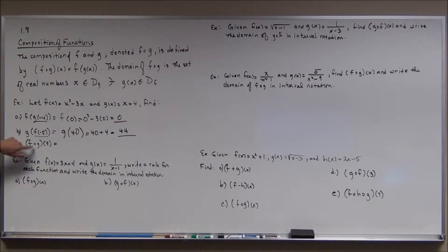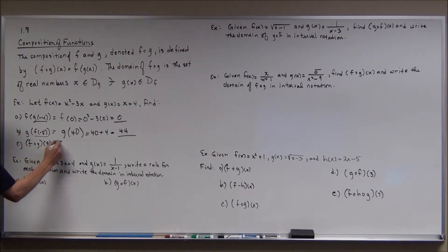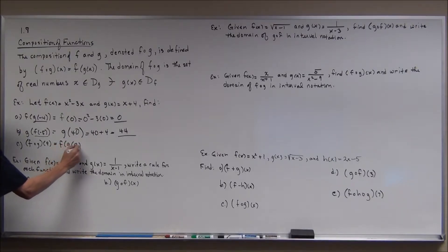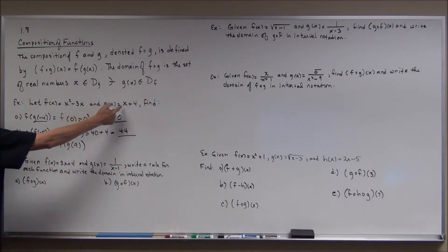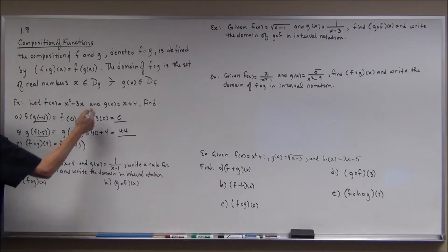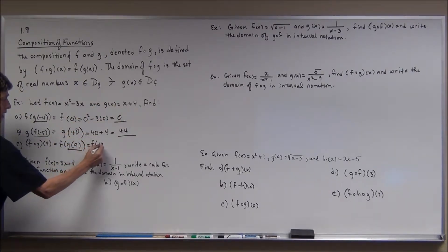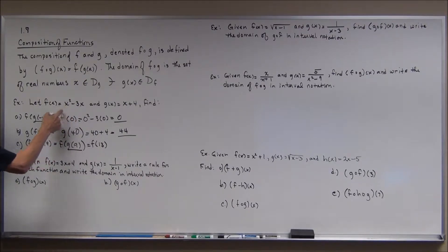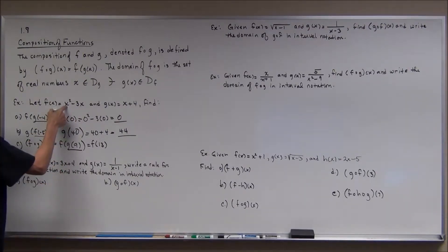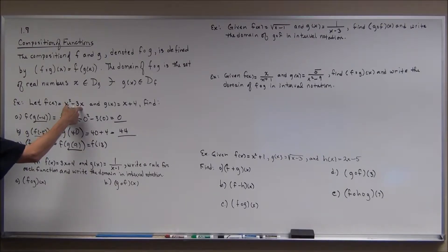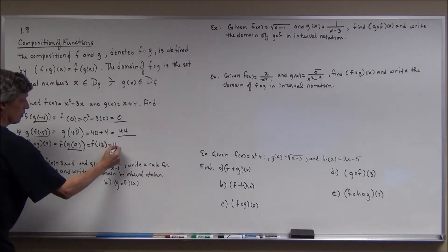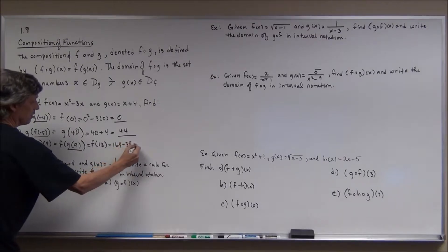This one is written as f circle g of 9, which means f of g of 9. First I find g of 9 by plugging 9 into the rule for g — so g of 9 is 13. Now I plug 13 into f. 13 squared is 169, minus 3 times 13 is minus 39. 169 minus 39 is 130.